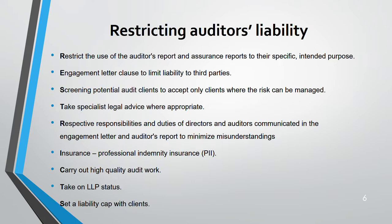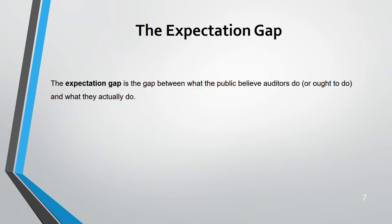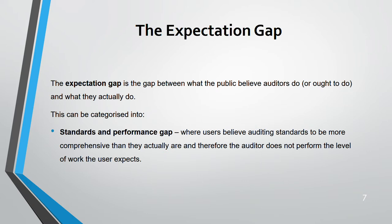Now we move on to the expectation gap. There is always an expectation gap — users expect something from the auditor, while the auditor's actual responsibilities are different. The bigger the expectation gap, the worse it is; the smaller it is, the better. The expectation gap means there is a gap of understanding between the public and auditors. It can be categorized into two types. First, the standard and performance gap: general users do not understand the full scope of auditor responsibilities.